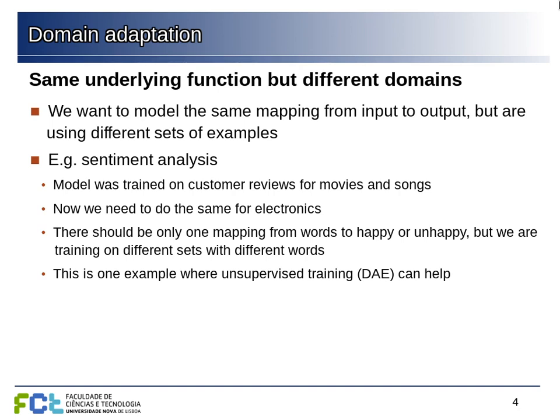There should be some mapping from words to sentiment that is similar in both cases, but the domain and vocabulary differ slightly. This is also an area where unsupervised learning is often used — for example, denoising autoencoders — but we'll talk about that next week. The general idea is that there is underlying structure in the data regardless of the different problems or domains.